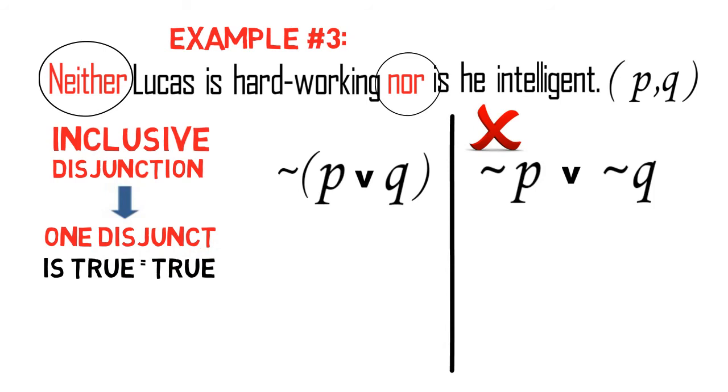With this, let us determine the truth value of ~(P v Q) and ~P v ~Q to prove that they are not the same. Let us assign the truth value true for P and false for Q.